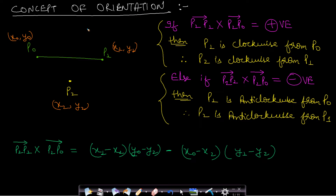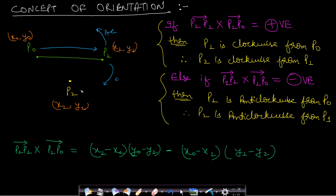Let us now look at the concept of orientation. Given a line and a point, we want to find the orientation of point P2 with respect to line P0-P1. Orientation means: if you are moving from P0 to P1 and you are at point P1, do you move in the anti-clockwise or clockwise direction to reach P2? In this case the orientation of P2 is clockwise with respect to vector P0-P1.